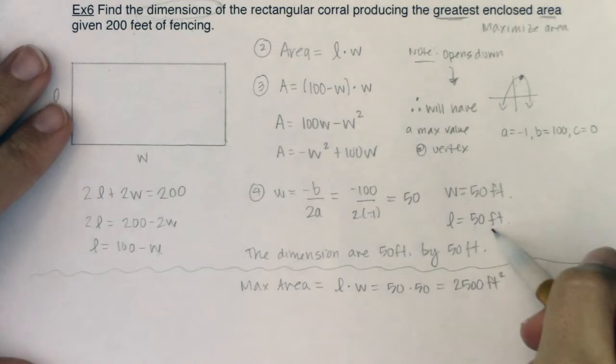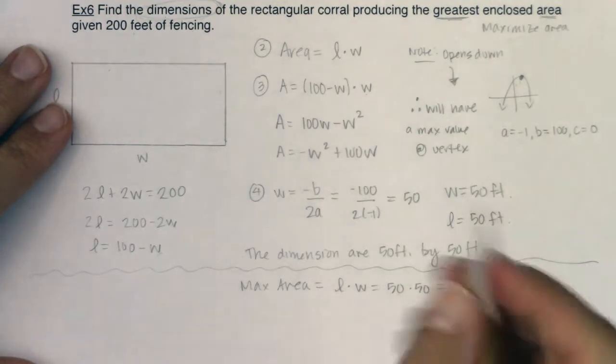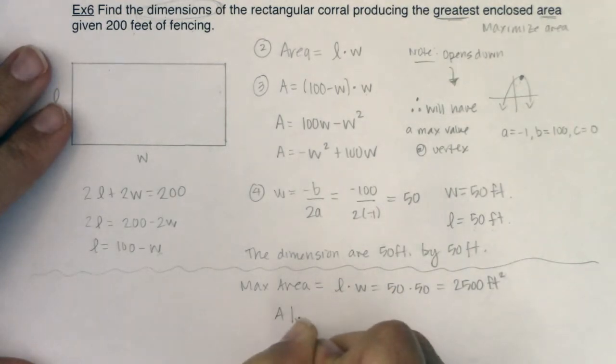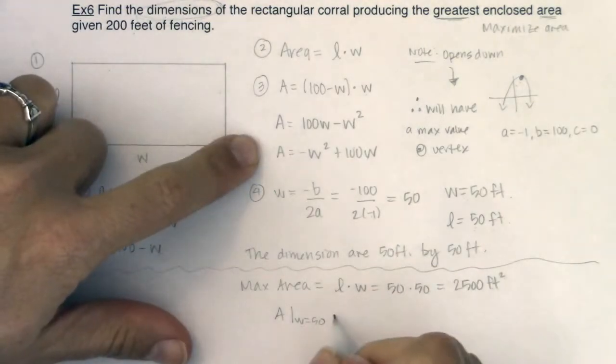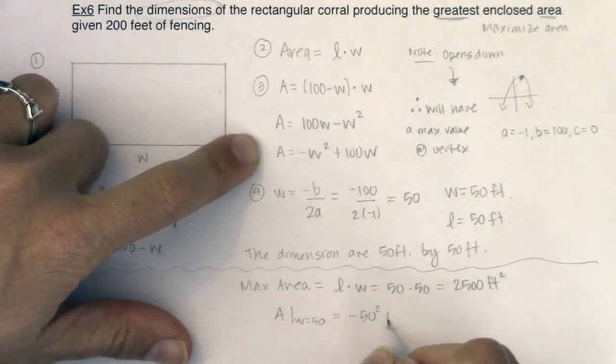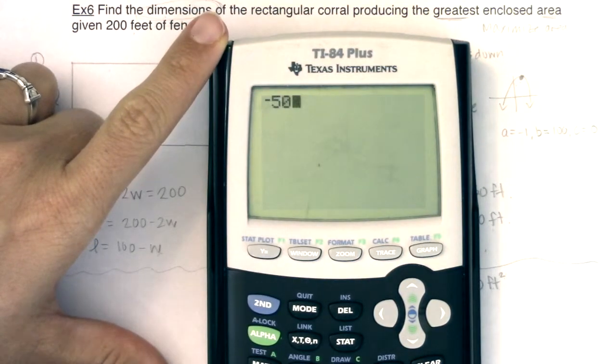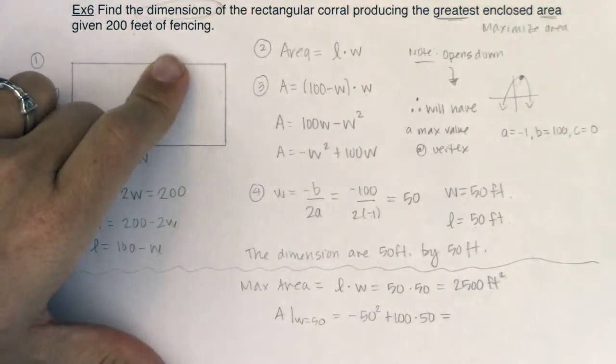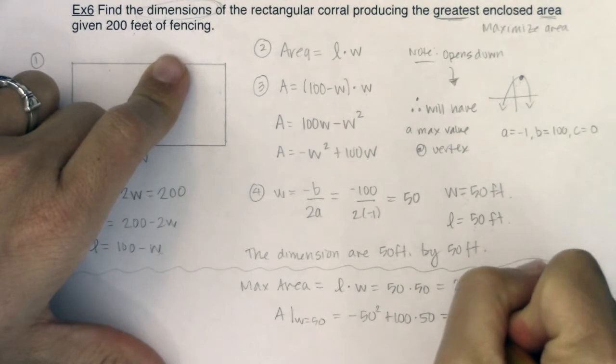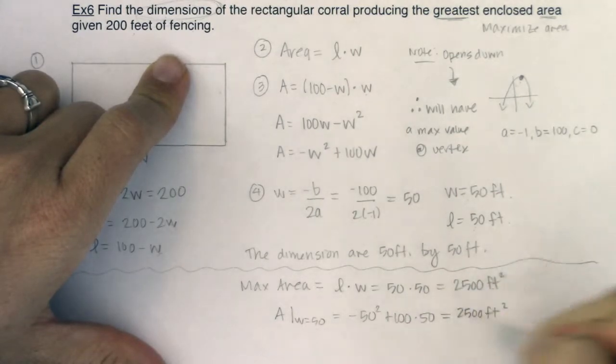Because you also, by your units, have feet times feet. That's why we say area has two-dimensional units. Length has one-dimensional units, areas have two-dimensional units, and volumes have three-dimensional units. You also could have plugged in W being 50 to this area formula and done negative 50 squared plus 100 times 50. Sure enough, you still get 2,500 square feet. So that is the maximum area.